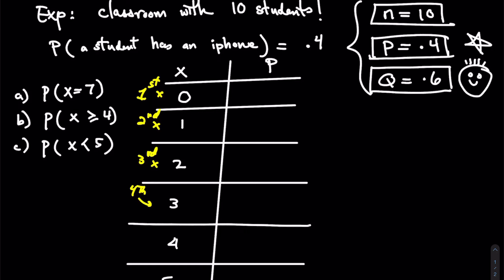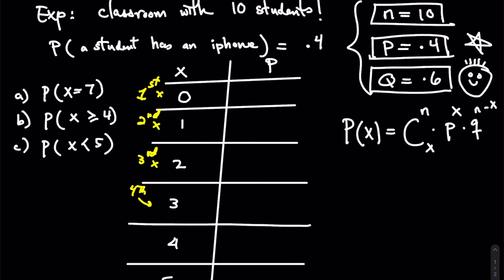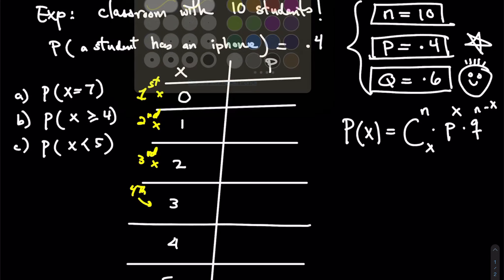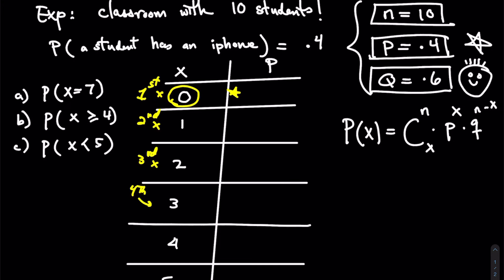The formula is: P(X = x) = C(N, X) × P^X × Q^(N−X). For the first calculation when X = 0: it's C(10, 0) × 0.4^0 × 0.6^10. On your calculator or in Excel, you compute COMBIN(10, 0) multiplied by 0.4 to the power of 0 times 0.6 to the power of 10. That gives you the probability that zero students have iPhones.